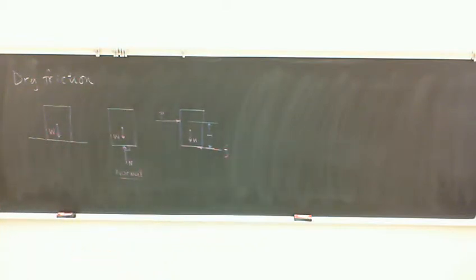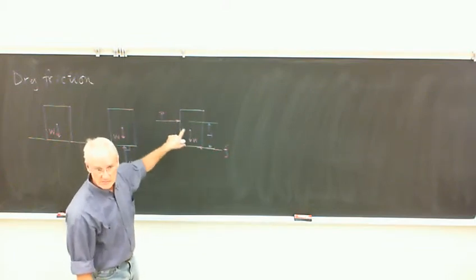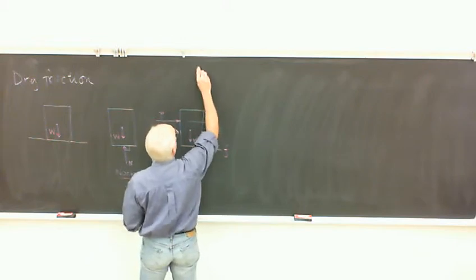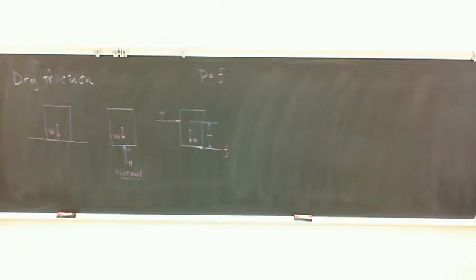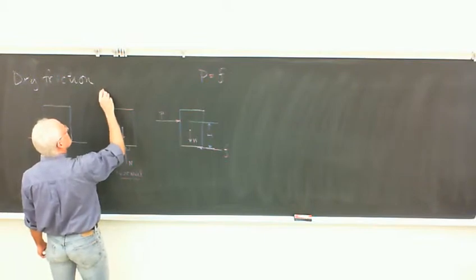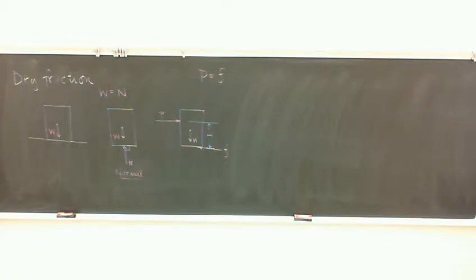Of course friction is resisting that push. In this class it's always going to be true that we're in static equilibrium, so forces are always balanced. We know that T must equal F; otherwise they wouldn't be in equilibrium. That goes with the condition of the normal force: W equals N in this case. But in many other cases W and N will not be equal in magnitude.